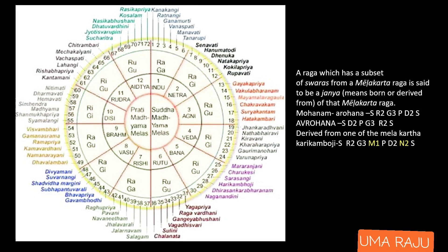Finally we have the secret behind the number 72! You can see in the diagram all 72 ragas. Suddha Madhyama is Ma1 and Prati Madhyama is Ma2, so with Ma1 we have 36 ragas and with Ma2 another 36. A raga which has a subset of swaras from a Melakarta raga is called a Janya raga — meaning 'born from' or 'derived from' the Melakarta. The Melakarta raga is the superset, and the Janya raga is derived from it as a subset.